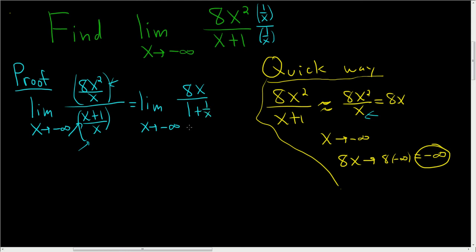So as x approaches negative infinity, 1 over x is going to get really, really small. It's going to approach 0. So and then this piece here, this is going to approach negative infinity. So this is equal to negative infinity. So I hope this helps someone out there.